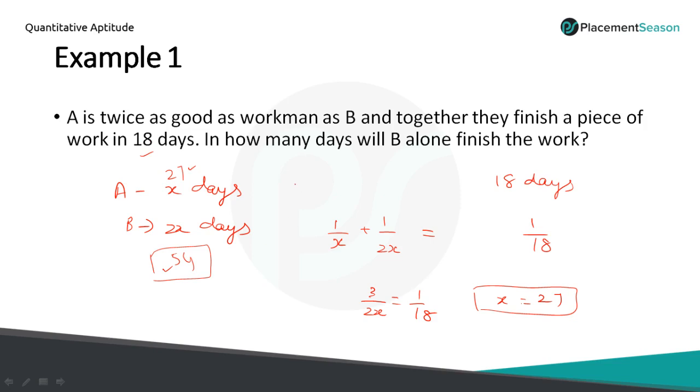The only thing you have to remember is A is twice as good a workman means A is more efficient, so he will take less number of days than B. If you remember this, you can solve this problem.